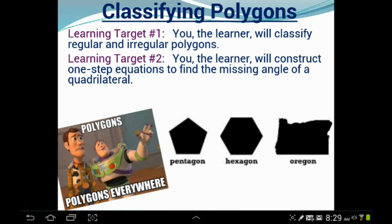Learning target number one is that you, the learner, will classify regular and irregular polygons. And number two, we're going to construct one-step equations to find the missing angle of a very specific kind of polygon, which is a quadrilateral.